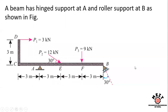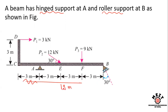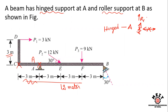Hello, in this video, a given beam with hinged support and roller support — an L-shaped beam. We need to find the unknown reactions. The horizontal portion length is 12 meters and the vertical flange length is 3 meters. At point A, we use a hinged support.